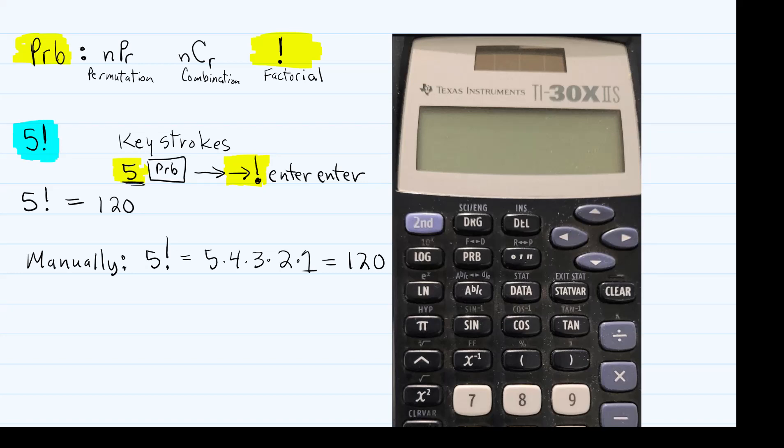You depress five, then you hit the PRB button, and when that comes up, you arrow over, arrow over again, and hit enter, and then hit enter again, and it's gonna give you the answer of 120. And if you were to do it manually, five exclamation point means five times four times three times two times one, and that does indeed equal 120.